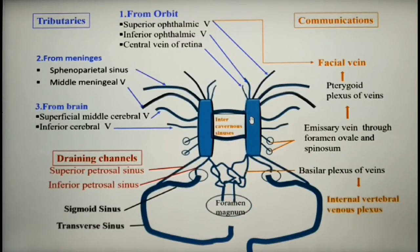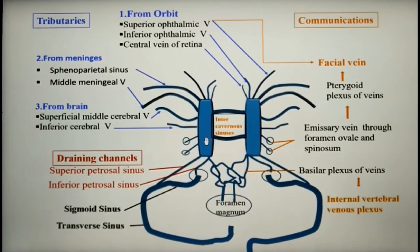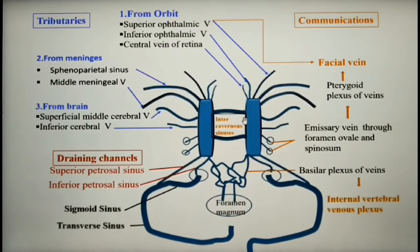The cavernous sinus also drains into the facial vein through the superior ophthalmic vein. Additionally, the right and left cavernous sinuses communicate through inter-cavernous sinuses. All these communications are valveless and blood can flow through them in either direction.